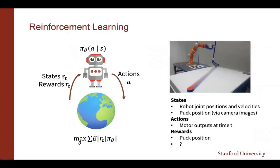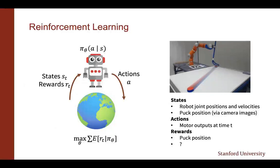Let me start briefly with the general problem formulation for reinforcement learning. We assume that we have an agent and an environment. The agent performs actions and the environment responds by giving back states and rewards to the agent. Our goal is to learn an action selection policy, denoted by pi, which conditioned on the state of the environment helps us understand what action to select. Our goal is to maximize the expected return conditioned on the policy we've learned.